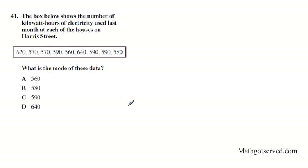Let's move on to question 41. It says the box below shows the number of kilowatt hours of electricity used last month at each of the houses on Harris Street. What is the mode of this data? So mode is basically most recurring, the element that shows up the most, the most number of times. That's your mode.